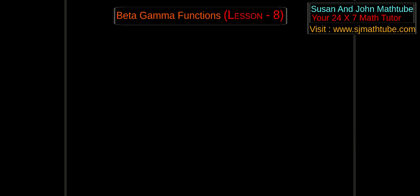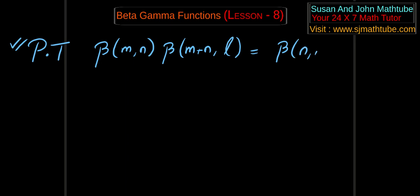Now let's wind up this video with a very small question and a very simple question. And the question is, prove that. I am a little bit lazy, so I am going to write PT. Prove that Beta MN multiplied with Beta (M plus N) L is equal to Beta NL multiplied with Beta (N plus L) M.